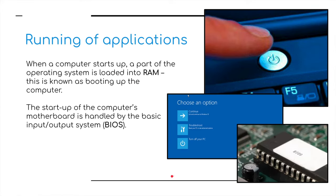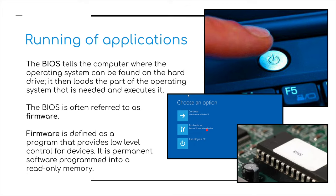When we turn our computers on — when we first start it up — a part of the operating system is loaded into RAM memory. This is known as booting or booting up the computer. The startup of the computer's motherboard is handled by the basic input-output system, the BIOS. The BIOS tells the computer where the operating system can be found on the hard drive. It then loads the part of the operating system that is needed and executes it.